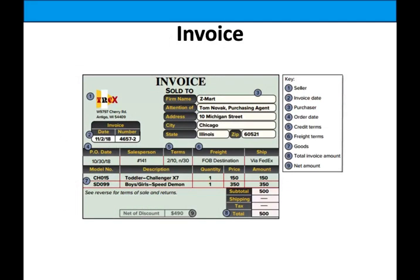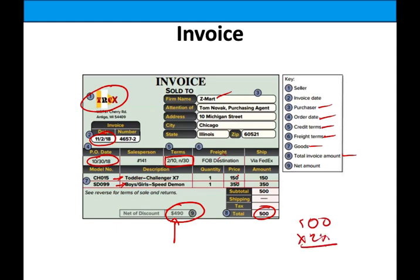This is what a purchase invoice would look like. The name of the seller is Strax, the purchaser is Zmart. The invoice date is important because it determines whether you get the discount or not. Credit terms and freight terms are listed. The goods total $500 — a Toddler Challenger X7 at $350 and a Boys/Girls Speed item at $150. If you pay within the discount period, you only pay $490, saving yourself $10 — 2% off the $500.